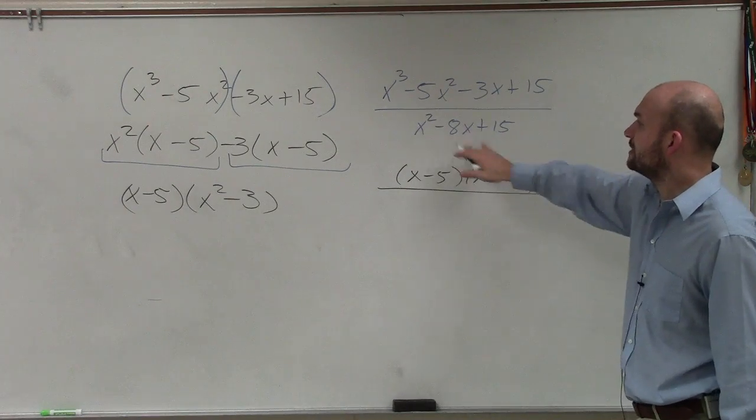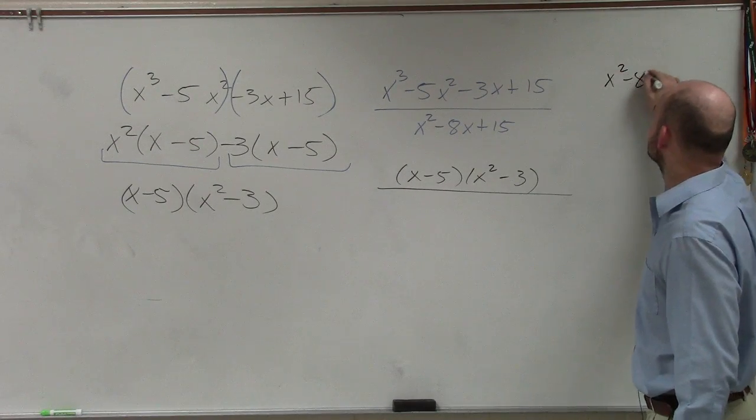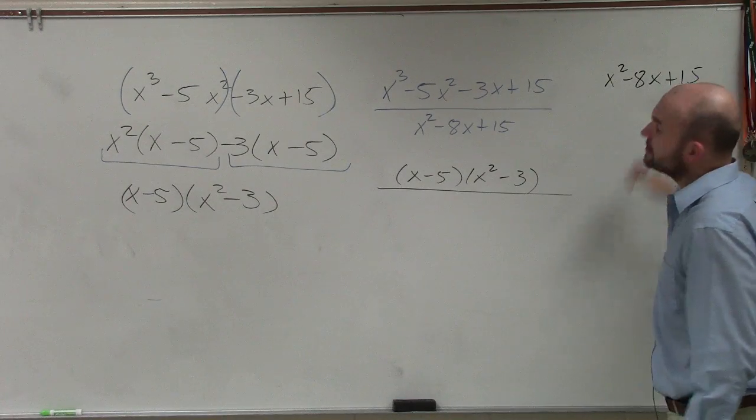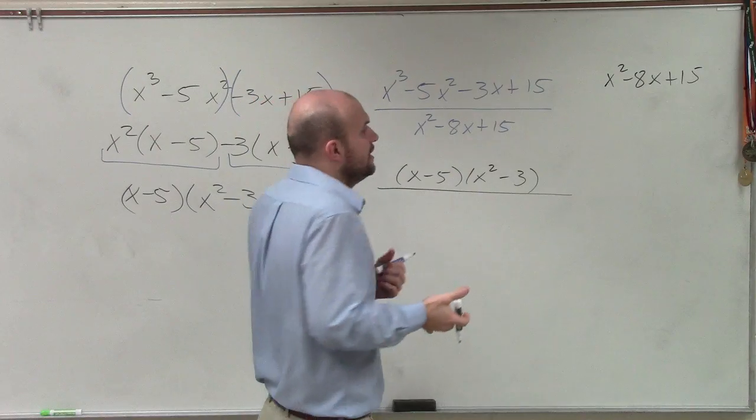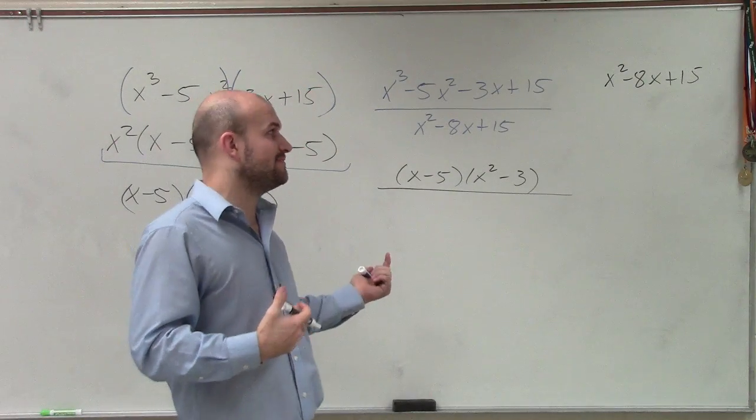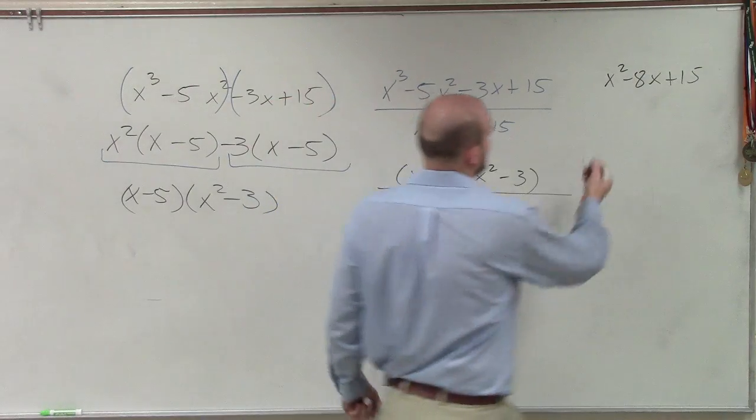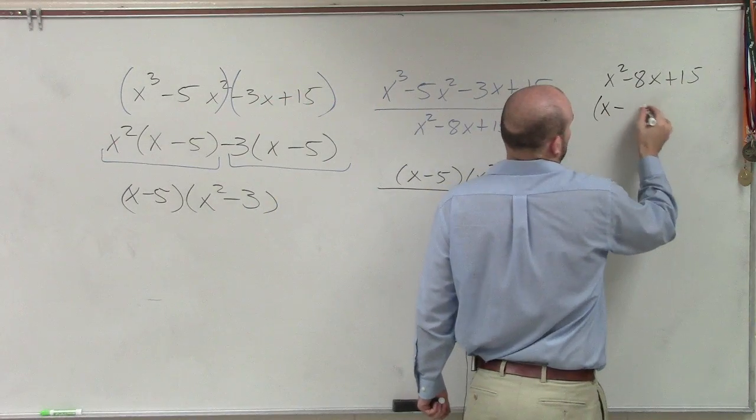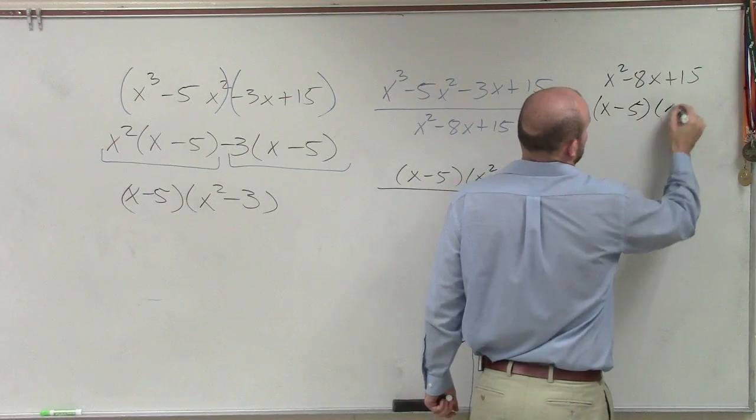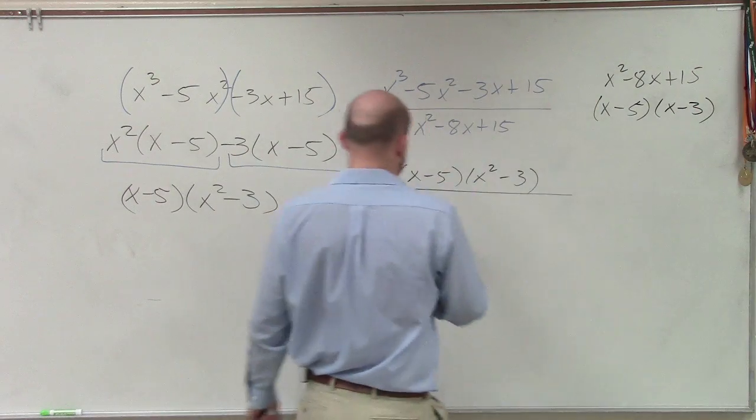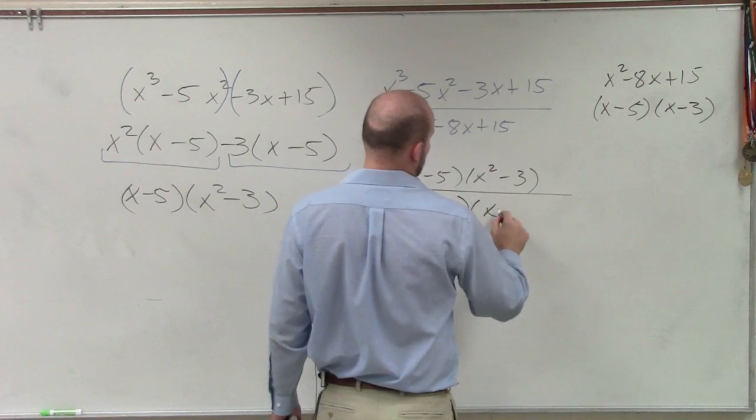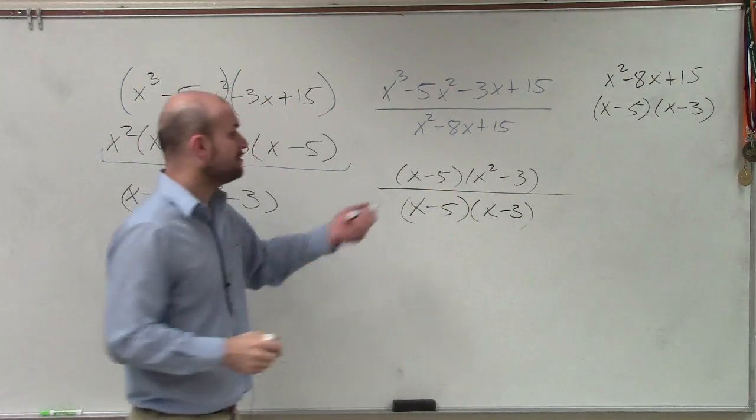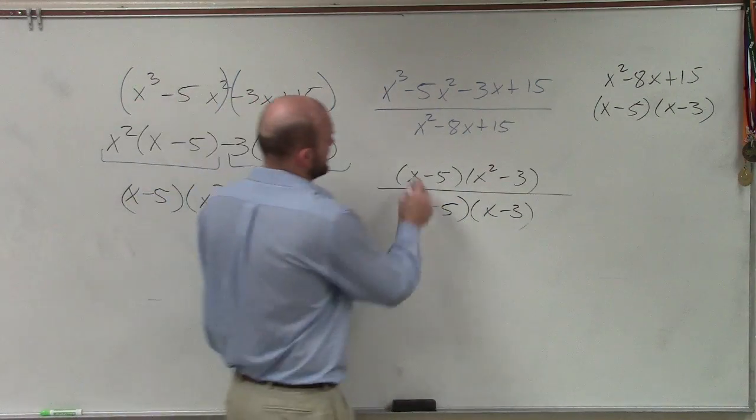And then what we do is we go and factor this. Well, x squared minus 8x plus 15. You guys might be thinking, what two numbers multiply to give me 15 but add to give me negative 8? Well, that can be, hopefully, negative 5 times x minus 3. So therefore I can say this is x minus 5 times x minus 3. Well, therefore my x minus 5 divides into my x minus 5.